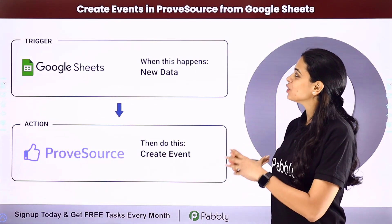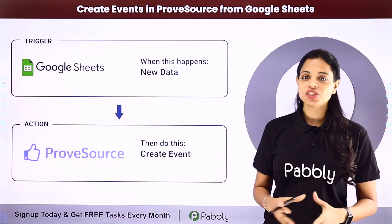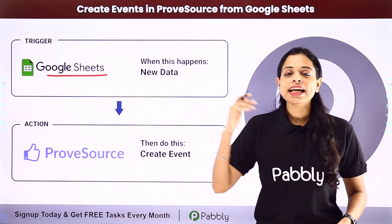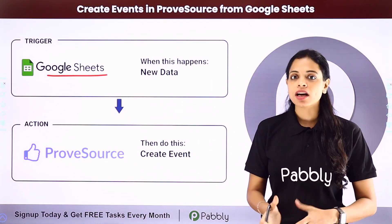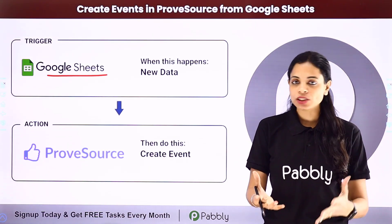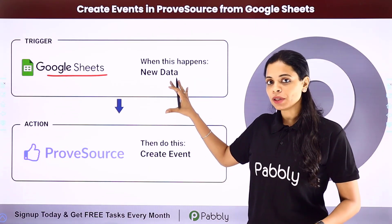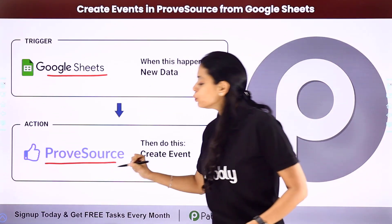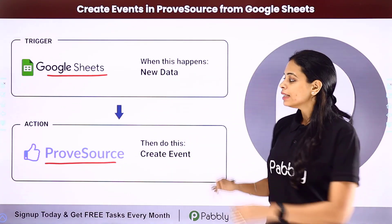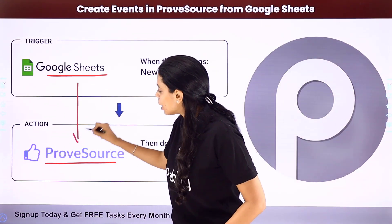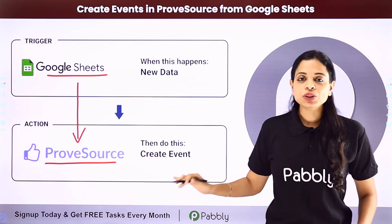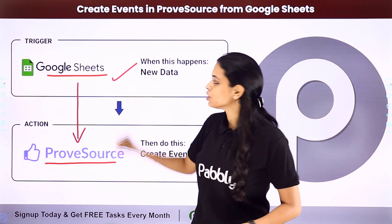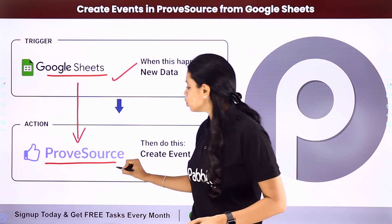In this video we are going to see how to create events in ProveSource from Google Sheets. So let's say that you are using Google Sheets as a spreadsheet and every time you have got new data about your customer and the products bought, you want to create an event in ProveSource, which is a social proof marketing platform. This can be done by integrating these two applications using a software like Pabbly Connect, where your trigger application would be Google Sheets and your action application would be ProveSource.